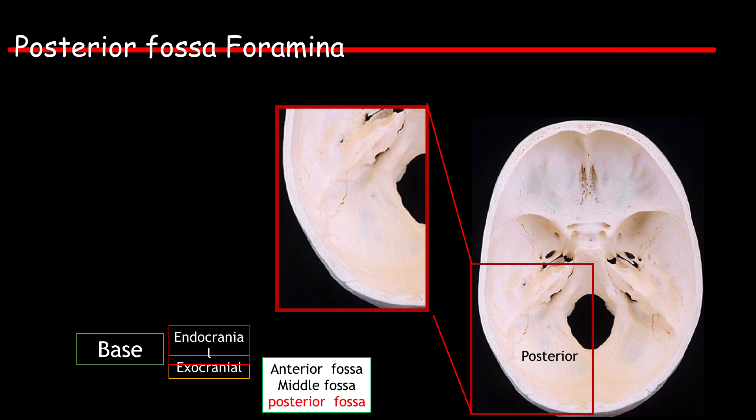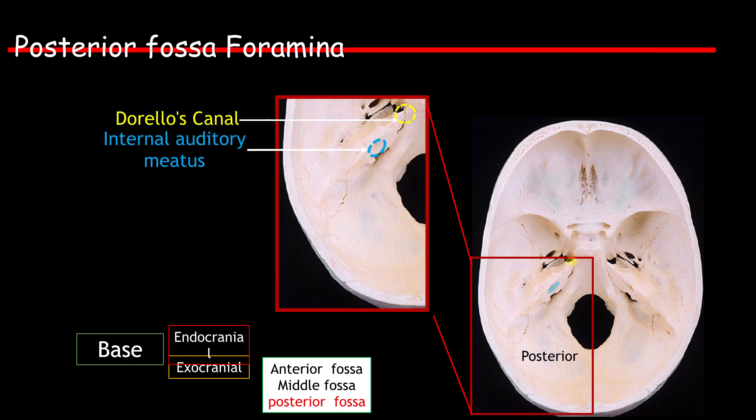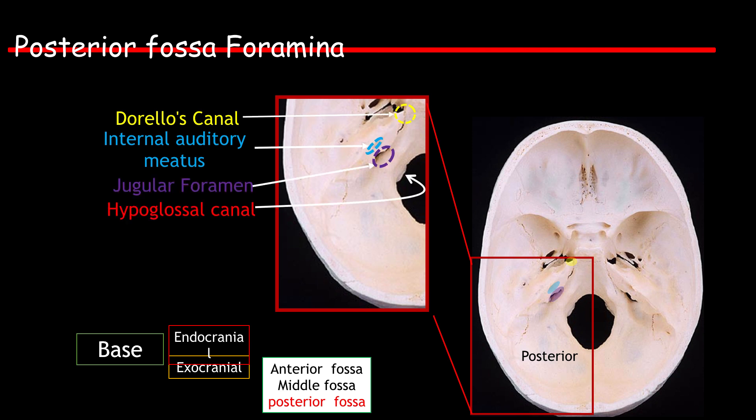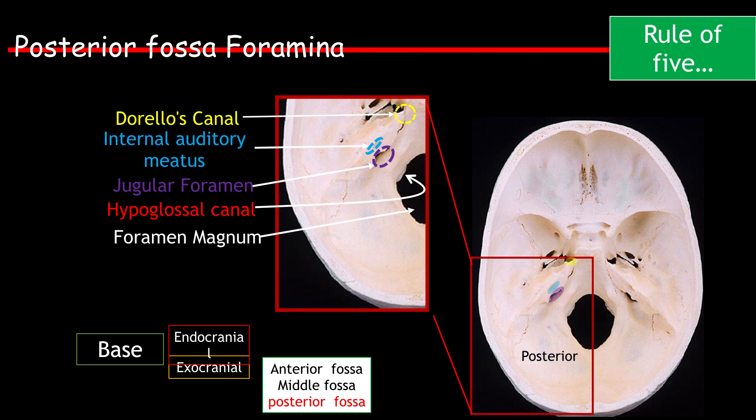Posterior fossa foramina include Dorello's canal, the internal auditory meatus, the jugular foramen, the hypoglossal canal, and the foramen magnum.